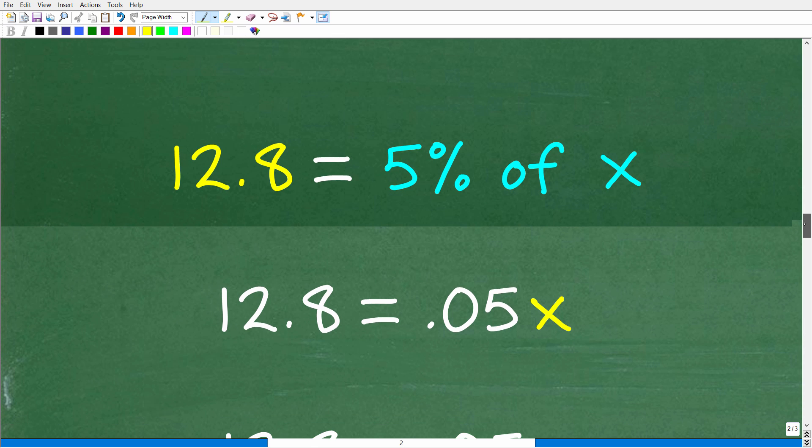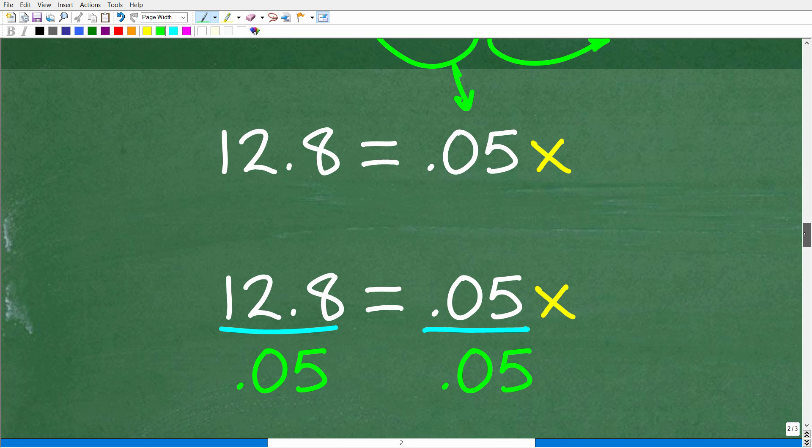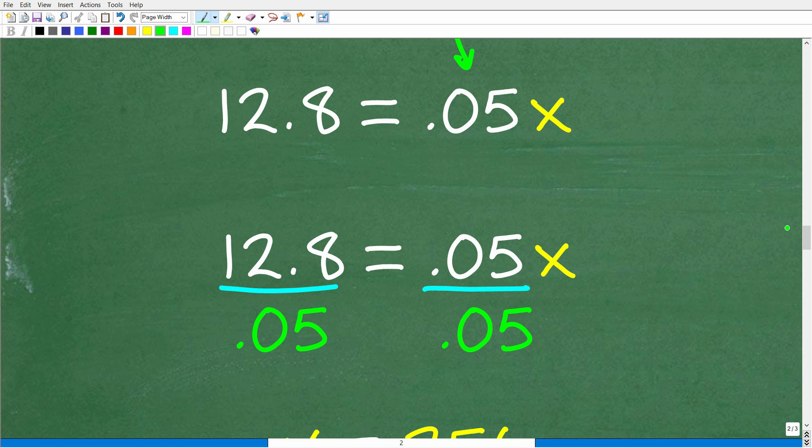So here we have 12.8 is equal to 5% of what number. What we want to do here is solve for this number X. We need to change this percent into a decimal. We're going to take 5 divided by 100 or move the decimal point over 5.0%, two places to the left. We're going to get 0.05 and we're going to multiply it by this number. So now we have a new equation: 12.8 is equal to 0.05X. Algebraically, 0.05 times X is the same thing as 0.05X. So now let's go ahead and focus on solving for X. This is actually pretty easy. There's only one step to do here and that is divide both sides of the equation by 0.05.